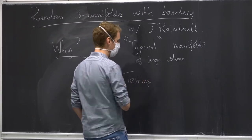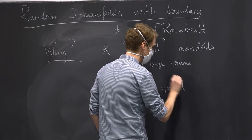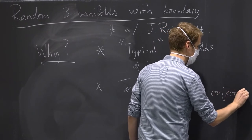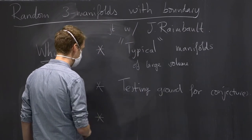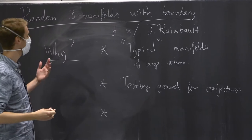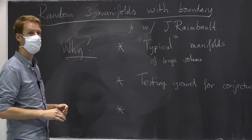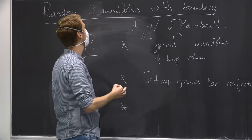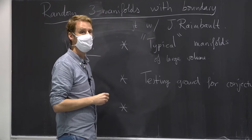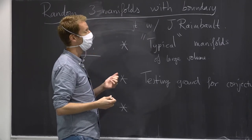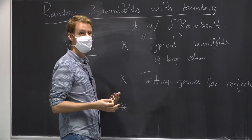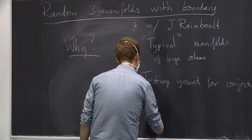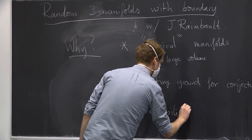Sometimes it is easier to prove a conjecture for a random manifold than for all manifolds. And then there is the probabilistic method, which has also been applied in this context - sometimes you want to know about the extremal properties of manifolds, like the smallest diameter or the largest systole. Sometimes it's easier to prove probabilistically that the probability your random manifold has that extremal property is non-zero, rather than explicitly constructing these manifolds.